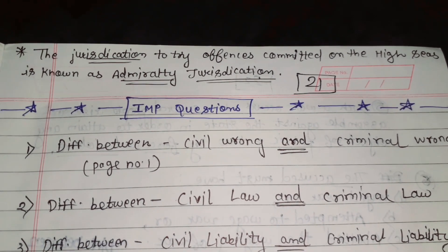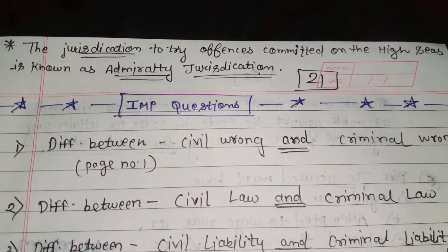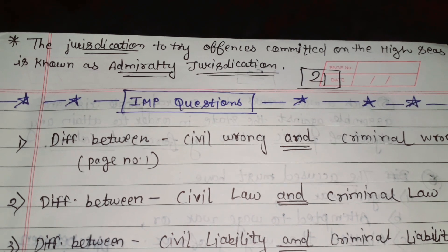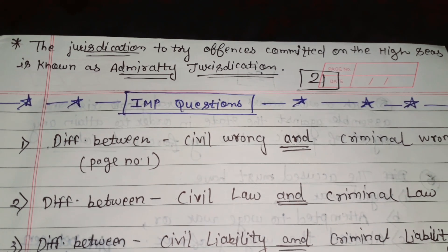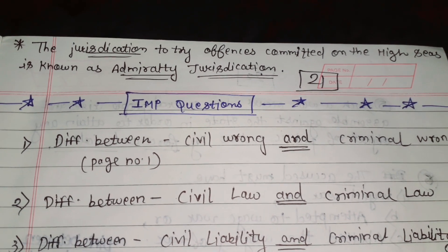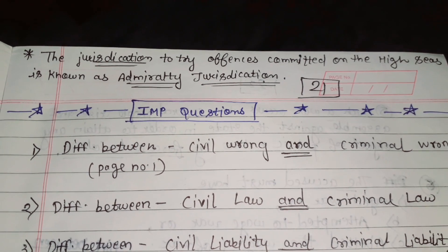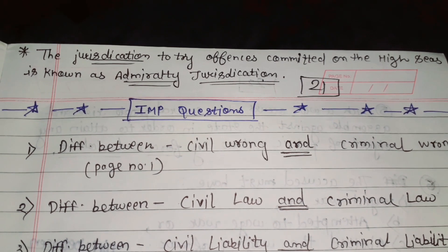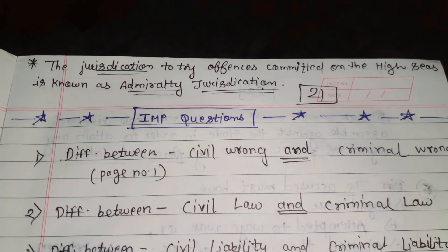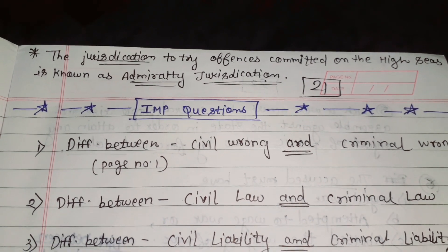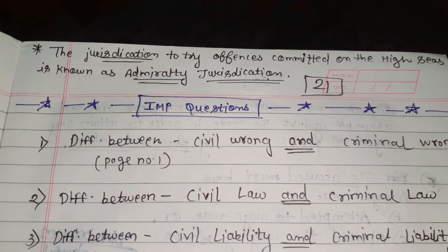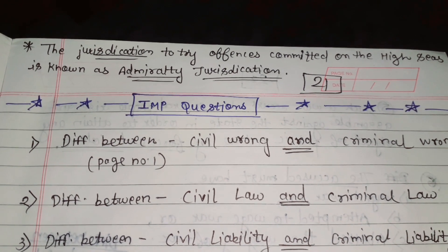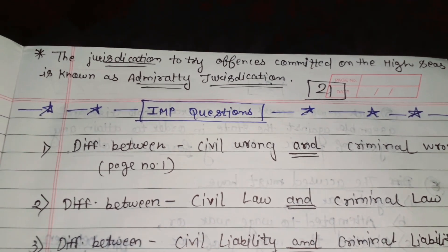Now, for those offenses which are committed on the high seas, the jurisdiction to try such offenses is known as admiralty jurisdiction. So offenses committed on the high seas fall under this specific jurisdiction, which is called admiralty jurisdiction.